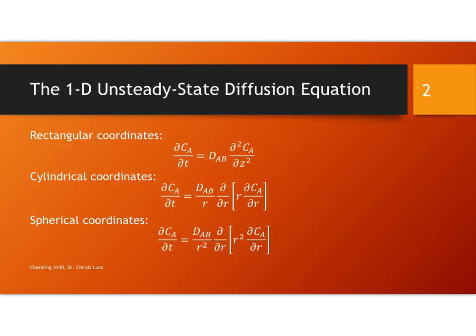We've been starting to look at unsteady state diffusion, and these are our equations for rectangular coordinates, cylindrical coordinates, and spherical coordinates. And these are the overriding equations, so they're first order in time and second order in position.